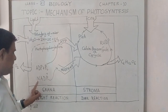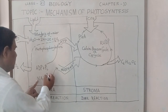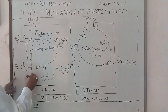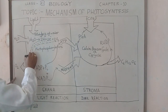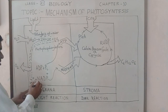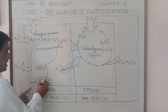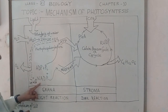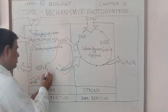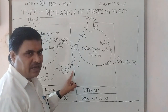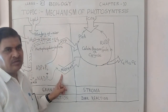During the light reaction, by the help of NADP+ and the hydrogen ions produced during photolysis, the hydrogen ions and electrons combine with NADP+, changing it into NADPH+H+, which acts as reducing power in the chloroplast.